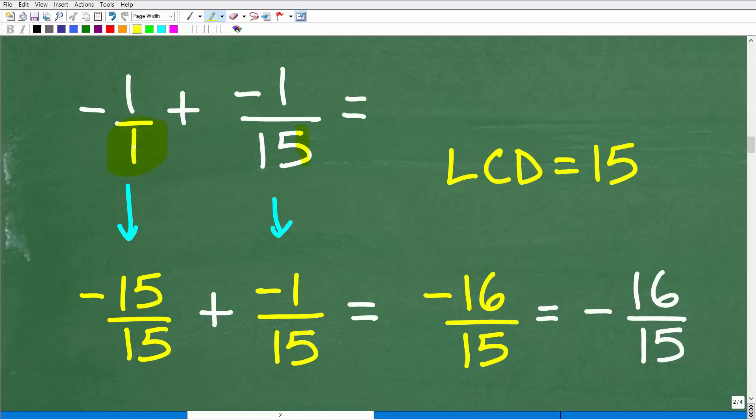So again, we're back to adding fractions. We have to consider what the lowest common denominator is. Here, in this case, it's 15. So we're going to have to change this fraction here. So its denominator is 15. So we're going to multiply both the numerator and denominator by 15. And you have negative 15 over 15. All right, so we're adding fractions. Again, same denominator. So we're going to add the respective numerators. So negative 15 plus negative 1 is negative 16. So negative 16 over 15.